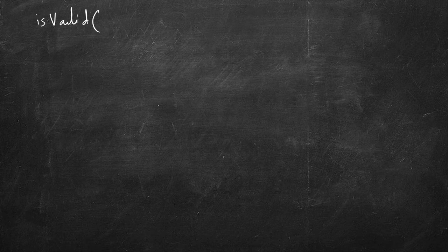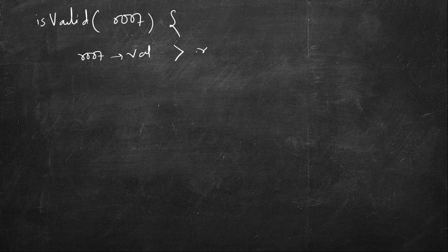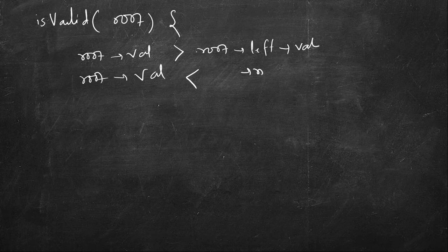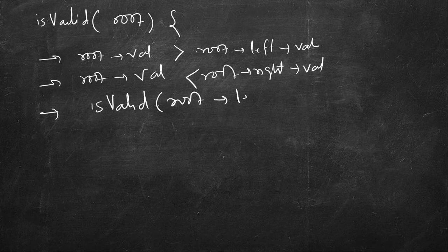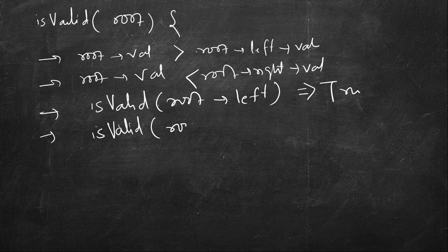So what is our algorithm? If we have a function isValid with a root node, the first condition is that the root's value should be more than its left child's value (if left exists), and the second is that the root's value should be less than its right child's value. Third condition: isValid(root.left) should return true. Fourth condition: isValid(root.right) should also return true.